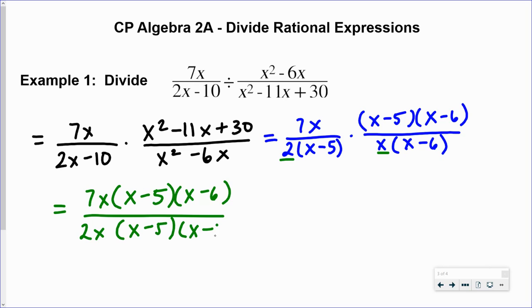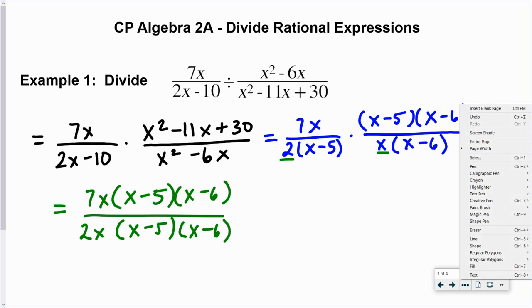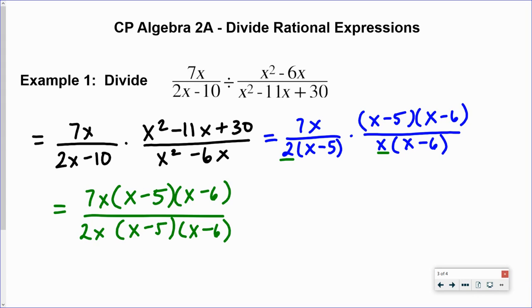And it looks like we have a lot of common factors that we can divide out. So they're shared by the numerator and the denominator. x divided by x is 1, x minus 5 divided by x minus 5 is also 1, x minus 6 divided by x minus 6 is also 1. So it looks like this will simplify down to 7 halves.